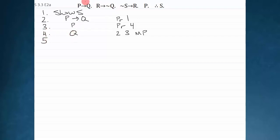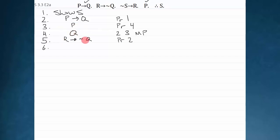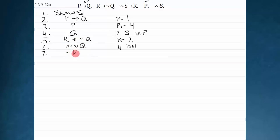What about premise two and three? I look around and see that premise two is R arrow not Q, and I have Q. I can do a modus tollens. But be careful — I don't actually have the negation of the consequent here. The consequent is not Q, so what I really need is not not Q. I can arrive at that by taking line four and double negating it, which is a rule we have. Now lines five and six combine to give a modus tollens, resulting in the negation of the antecedent, not R. That's lines five and six, modus tollens.